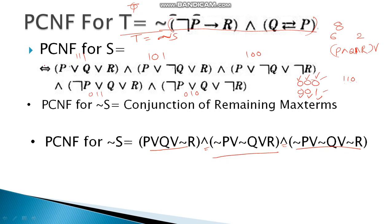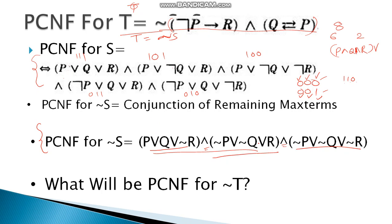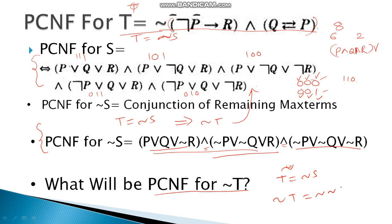In general, if you know the PCNF of a given formula, for its negation you identify the max terms not present and take their conjunction directly. As a further example, if T equals NOT S, then NOT T equals NOT of NOT S, which equals S. So the PDNF of NOT T is simply S itself.